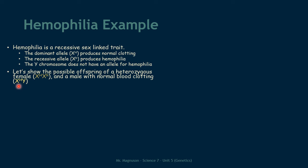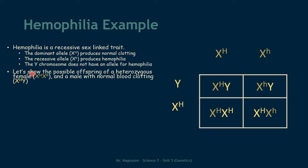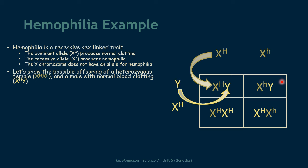Let's look at our Punnett square. Along the top I put the heterozygous female — X capital H and X lowercase h. Along the left-hand side I put the alleles for the normal blood-clotting male — Y chromosome and X capital H. To fill in each quadrant, we take the parental allele to the left and the parental allele from above and put them together. I matched the colors to show where each allele comes from in each cross. Now we need to look at the genotypes and phenotypes.